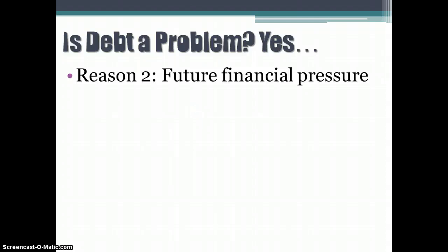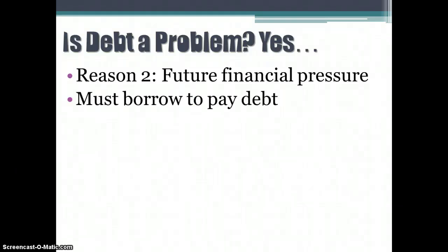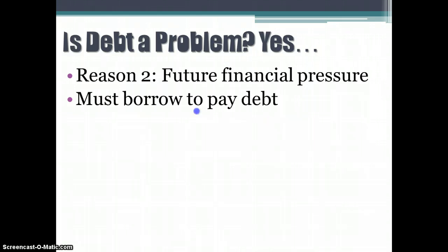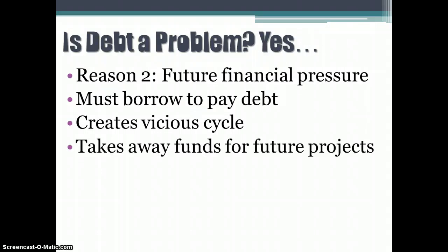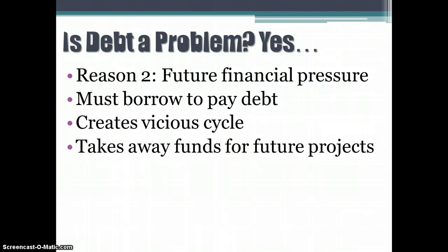Another problem is that debt puts future financial pressure on the country, because eventually you have to pay off your bills. Even if you can't pay off the debt entirely, you have to at least pay interest. In the case of the United States today, that means we have to borrow money to pay for money we've already borrowed — what we call a vicious cycle. You end up taking money away from future projects to pay for debt already borrowed, which limits what government can do in the long run. In extreme cases like Greece, it's financial collapse.